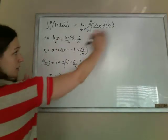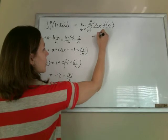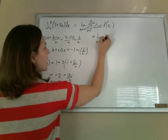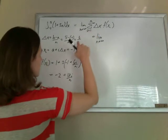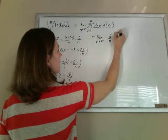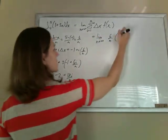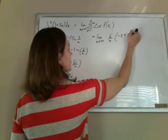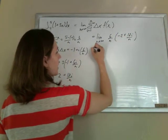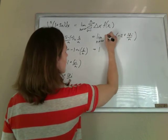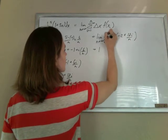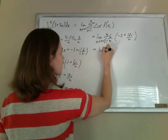Now I'm ready to plug in to this. So, now that I have all my pieces, this is the limit as n goes to infinity of delta x, we said was 6 over n. And f of x of i is negative 2 plus 18i over n. Now, oops, I lost my sigma. i equals 1 to n.